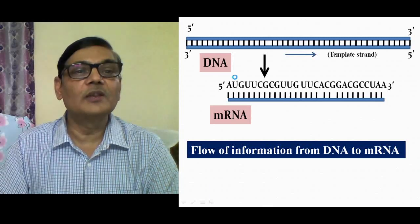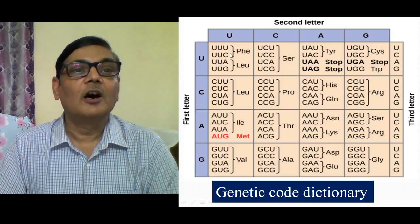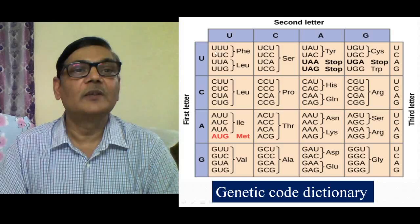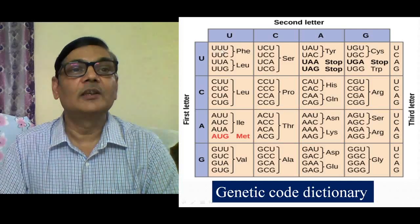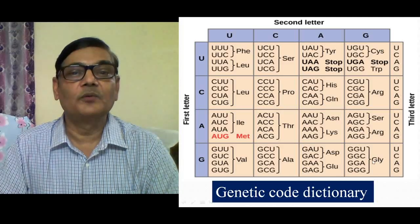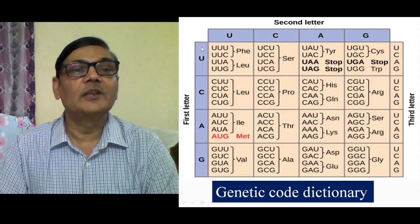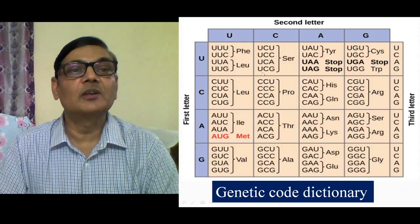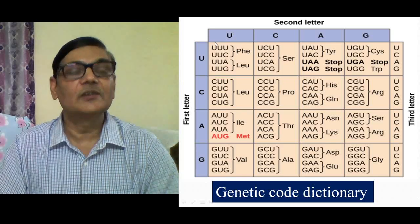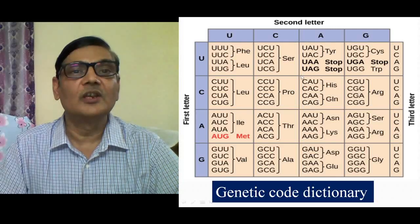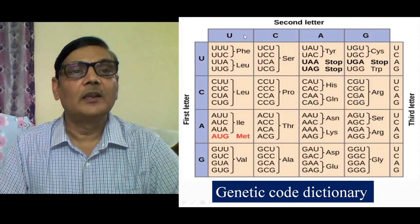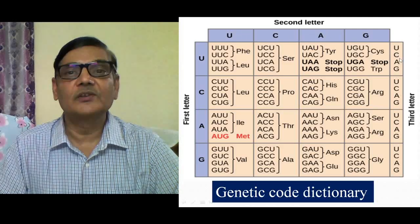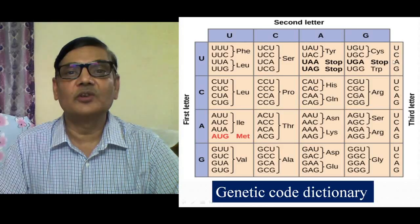In this table, all possible codons are shown. If you consider three-letter encoding for one amino acid — three letters making a codon — then a total of 64 codons would be possible, because four nucleotides A, U, G, C arranged in groups of three give 64 possibilities. There is a specific manner of presenting this genetic code dictionary: the first letter is shown here, the second letter here, and on the right side all four letters are shown in one group.